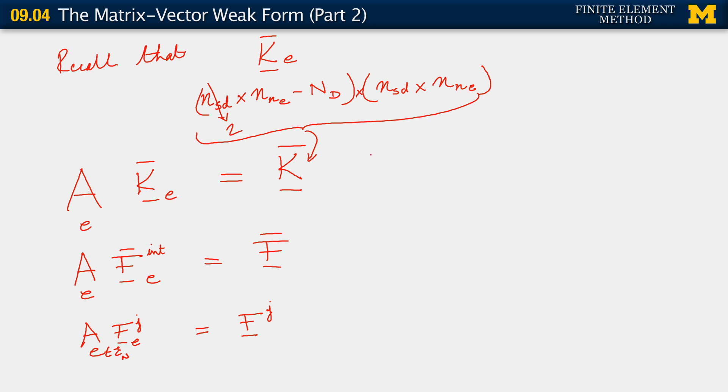So if you look at k bar, what we will see is that in general, it has fewer rows than columns. These are number of spatial dimensions times Nne minus Nd, as we observed above.